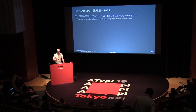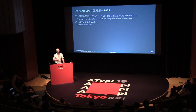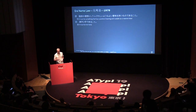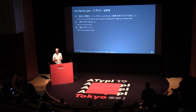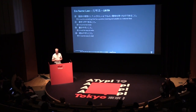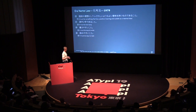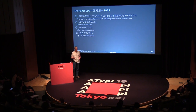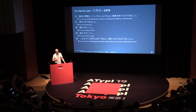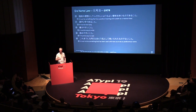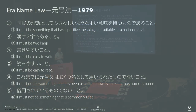First, the era name must be something positive and suitable for a national ideal. Second, it must be two kanji — not kana, not emoji. Third, it must be easy to write, and fourth, it must be easy to read. Criteria three and four strongly suggest the kanji will be among the 2,136 Joyo kanji. Fifth, it must not have been used as a previous era or posthumous name, and sixth, it must not be something commonly used.